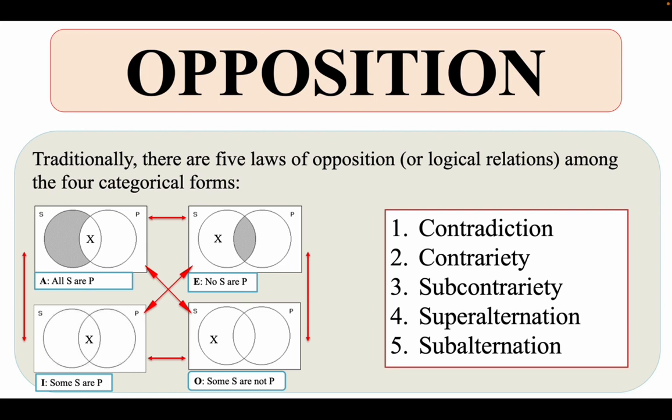There are only five laws: contradiction, contrariety, subcontrariety, superalternation, and subalternation. Let me explain what they are.